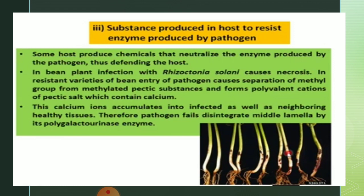Next: substances produced in the host to resist enzymes produced by the pathogen. Some hosts produce chemicals that neutralize enzymes produced by the pathogen, defending the host. In bean plant infection with Rhizoctonia solani, in resistant varieties, entry of the pathogen causes separation of methyl groups from methylated pectic substances, forming polyvalent cations of pectic salts containing calcium. These calcium ions accumulate in infected and neighboring healthy tissues, preventing the pathogen from disintegrating the middle lamella using its polygalacturonase enzyme.